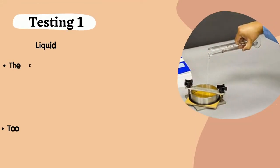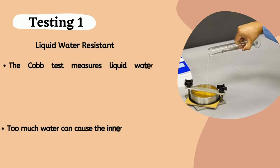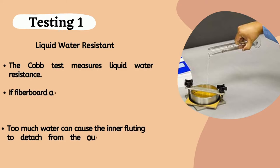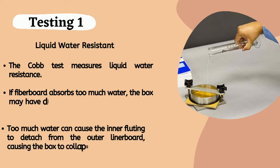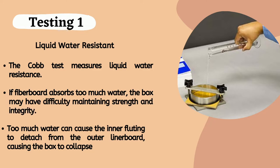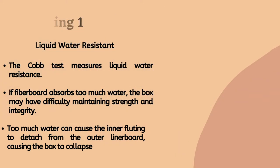The cog test is essential, as it tests the ability of the paper to resist the penetration of water and the quantity of water absorbed by the surface of fiberboard. If fiberboard absorbs too much water, the box may have difficulty maintaining strength and integrity. In fact, the inner fluting can even separate from the outer liner body if too much water is absorbed, essentially causing the box to break down.